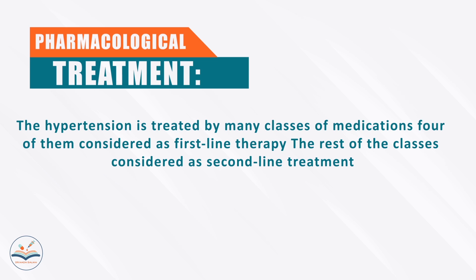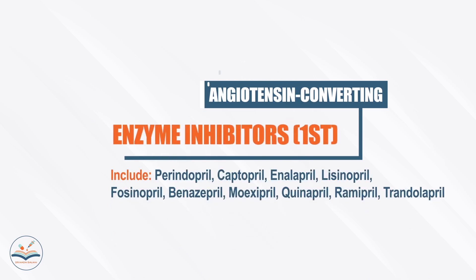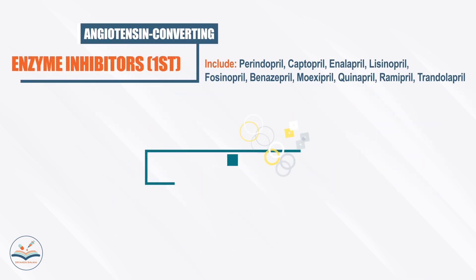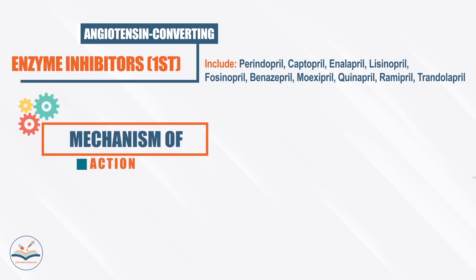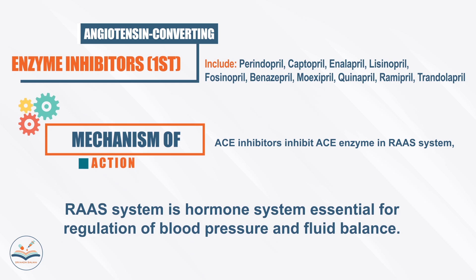Angiotensin converting enzyme inhibitors, like perindopril and captopril, inhibit the ACE enzyme in the renin-angiotensin-aldosterone system (RAAS). RAAS is a hormone system essential for regulation of blood pressure and fluid balance.